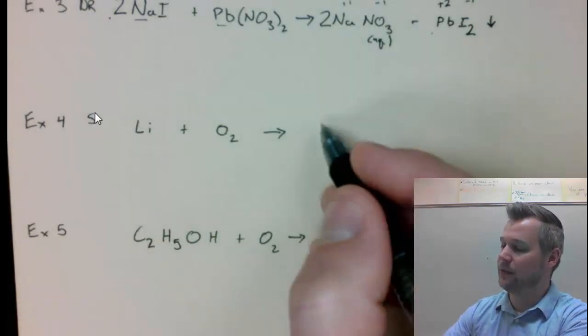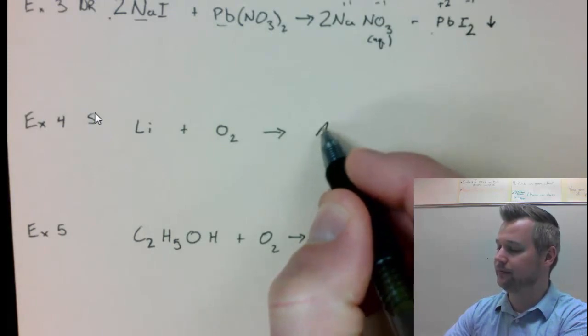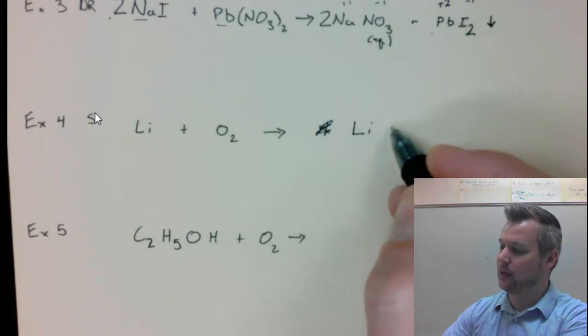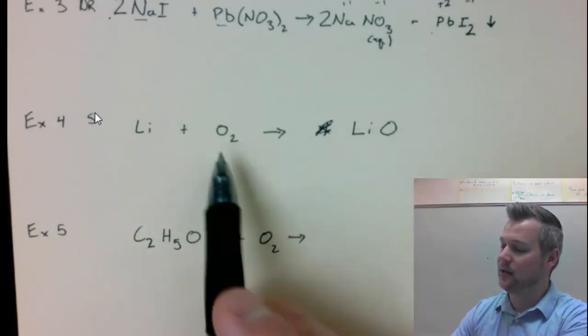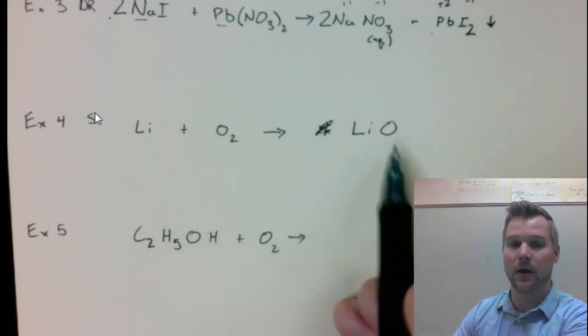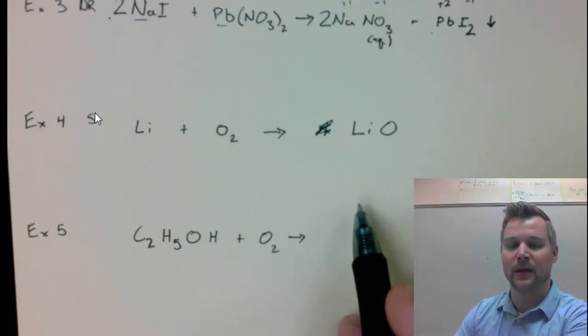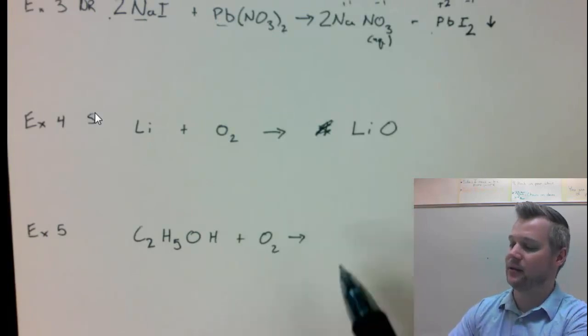The synthesis reaction pattern is A plus B turned into AB. Remember, when you write down formulas, metals go first. So I'm going to write down lithium and then with an oxygen on the back end. This 2 does not cross the arrow because that 2 is not part of a polyatomic ion.